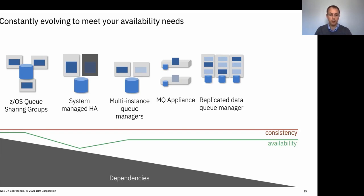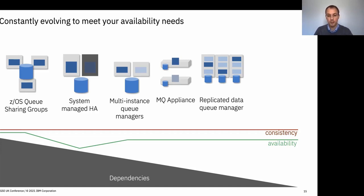On other platforms there are various other techniques based on either third-party products for system-managed HA, our multi-instance queue managers that use shared network storage, the MQ appliance which uses software replication to synchronously replicate data between two instances with automatic failover. That model of using replication rather than shared network storage was very attractive to a number of customers, but not everybody wants to use a physical appliance.